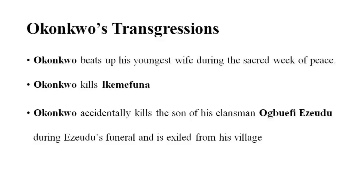Okonkwo proves his prowess by defeating a well-known wrestler called the Cat in a famous match. From then on, he rises to become one of the tallest leaders of the Umuofia clan, supporting a large family with his wealth, with a number of wives and children. What is ironic, however, is that this very physical prowess which earns Okonkwo so much respect within village society also frequently brings him into conflict with the rules and customs of the village community. Let us look through these instances of Okonkwo's transgressions.